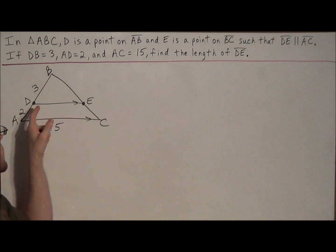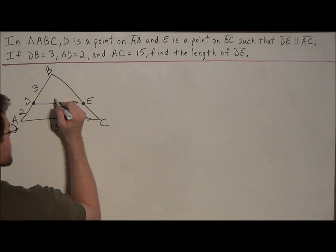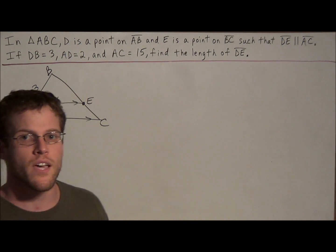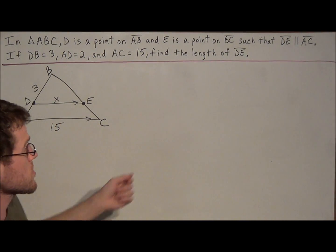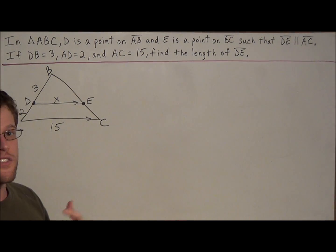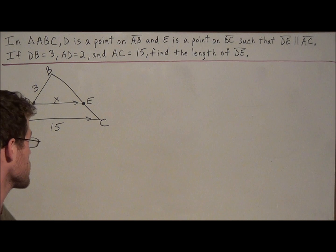And now if the goal is to find the length of DE, we could call that side X. But now we need to think about all the given information that was available for us. If we're told that DE and AC are parallel, this is usually going to indicate that we're going to have congruent angles.